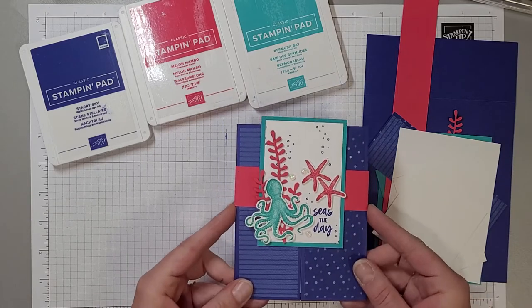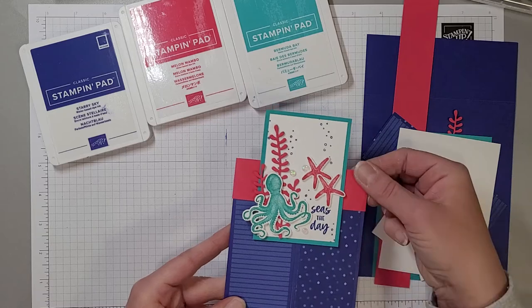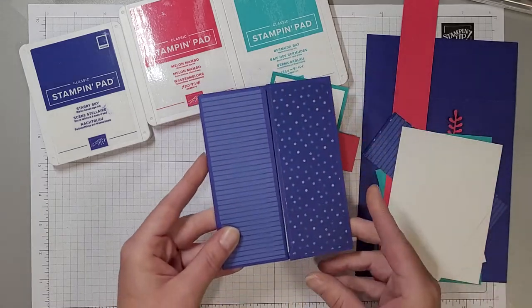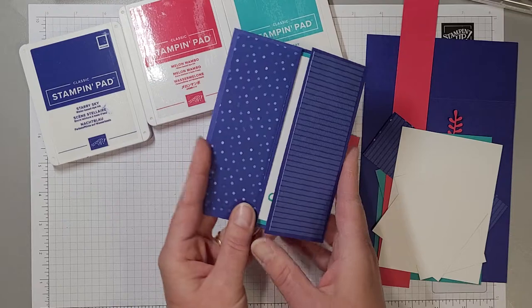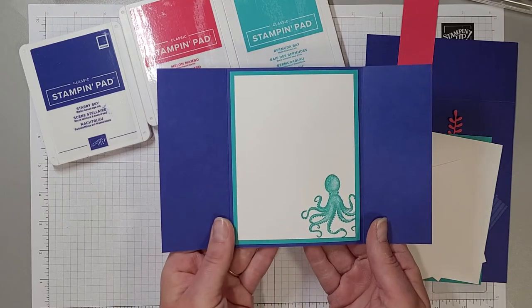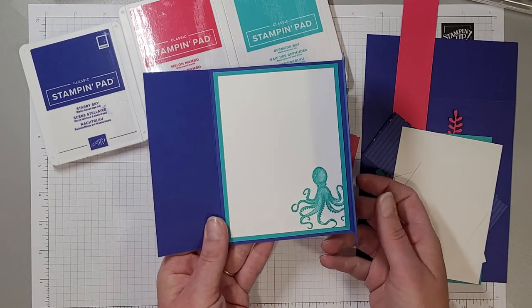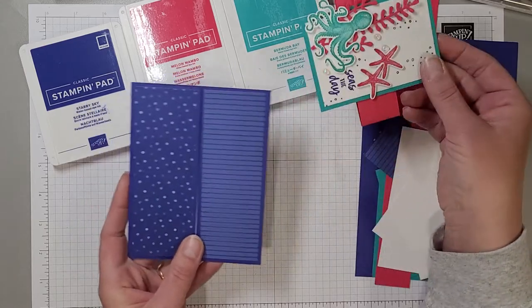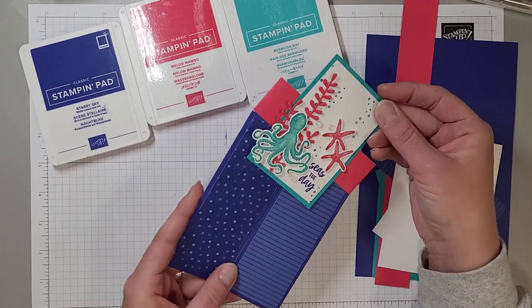So here I'll show you how the card works. This belly band is just going to slide right off and then we've got this fun gatefold with the octopus stamp there on the inside. So again that's just going to slip, the belly band.